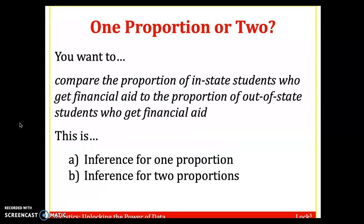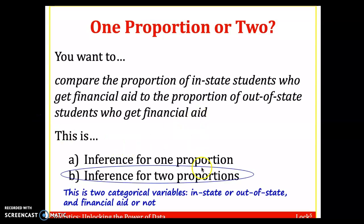Suppose you want to compare the proportion of in-state students who get financial aid to the proportion of out-of-state students who get financial aid. Hopefully you see, compared to the last example that was one proportion, this is two. Because you still want to know whether students are in-state or out-of-state, that's one variable. But then you also want to know, did they get financial aid or not? So this is an inference for two proportions.